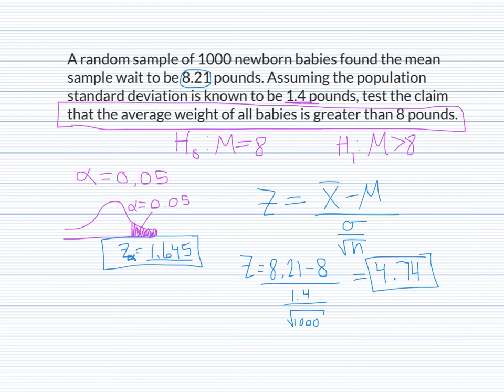Step six: compare the test statistic to the critical value. Our test statistic is 4.74. On a number line, with the critical value at 1.645, 4.74 lies well to the right. It is clearly in the critical region, and since it is in the critical region, we reject the null hypothesis.